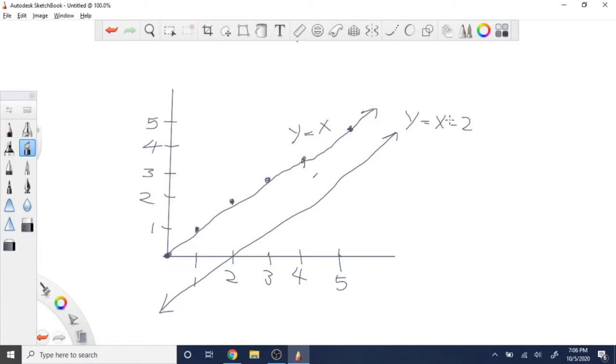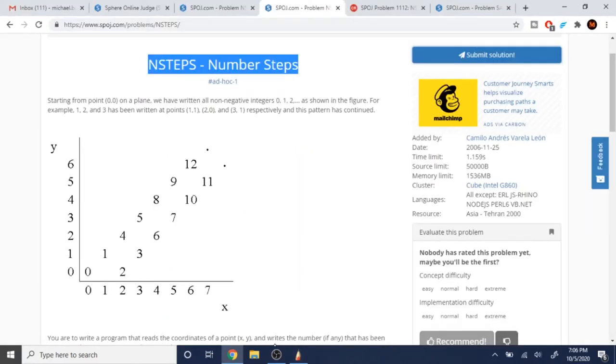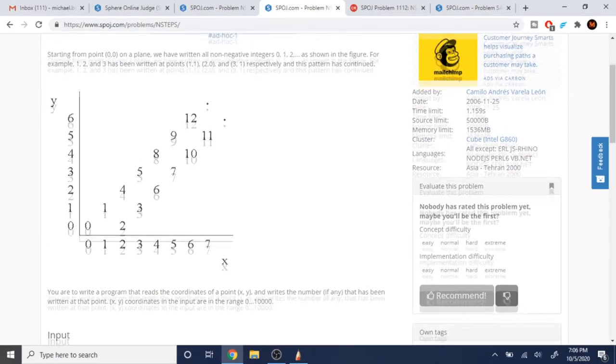So if you were to keep continuing going downward and label the rest of these, it's actually going to be y equals x minus 2. So if we know that whatever coordinate that we pass in, in the first line and the second line, then that means we can return a number, right?